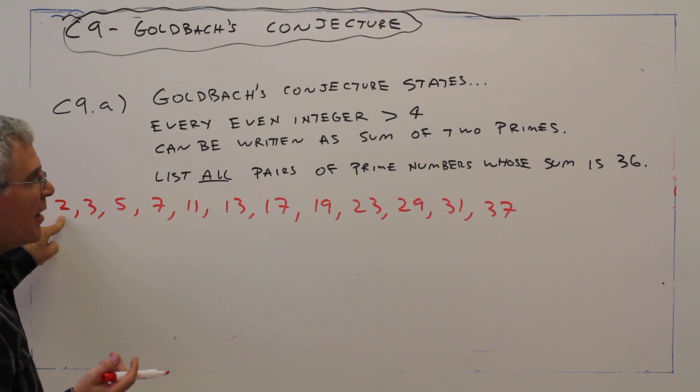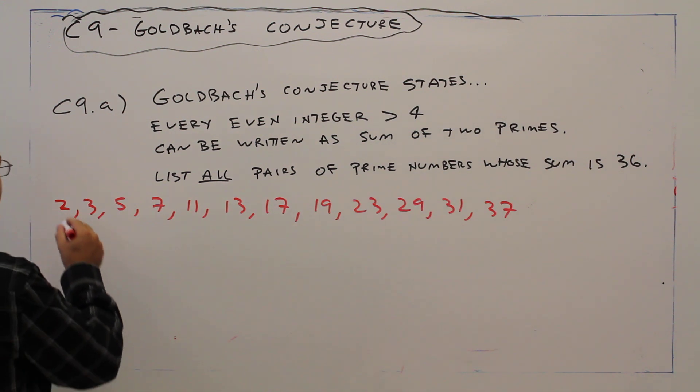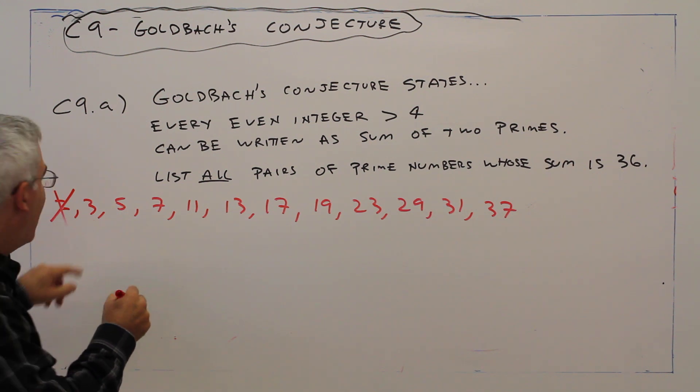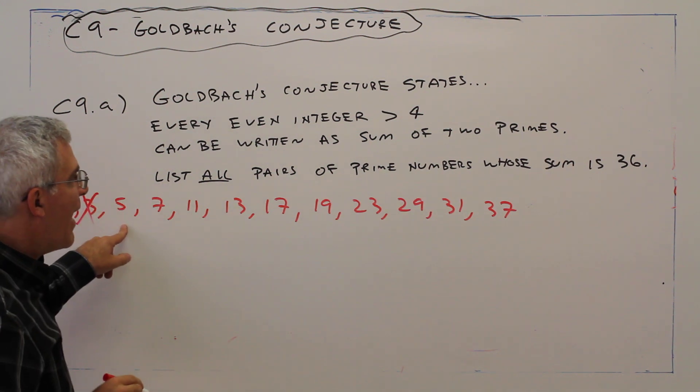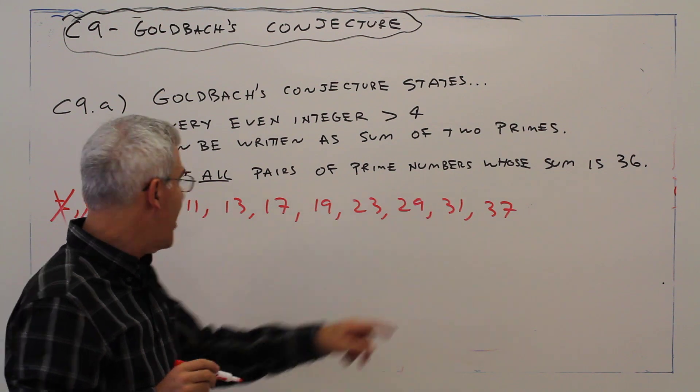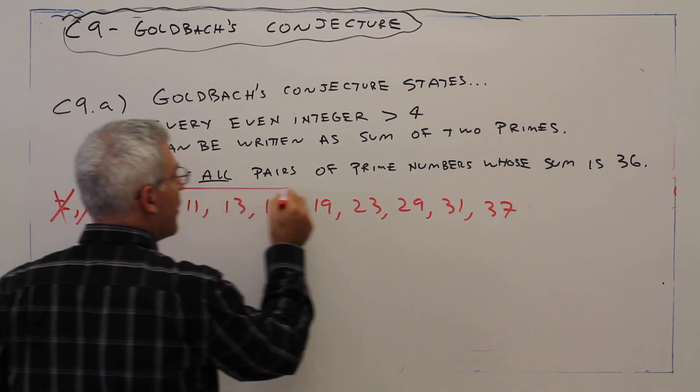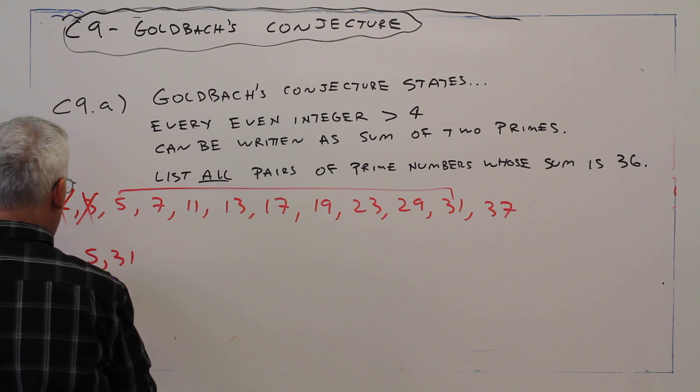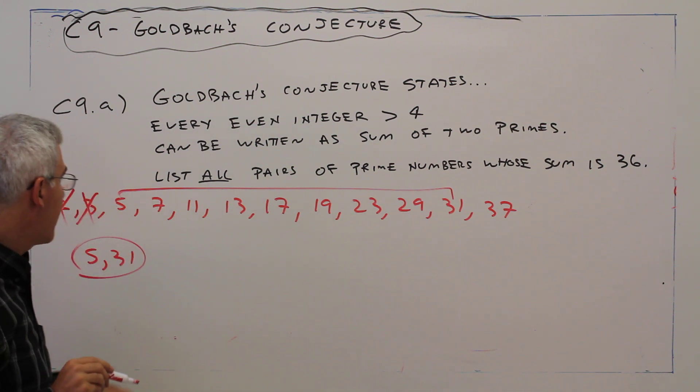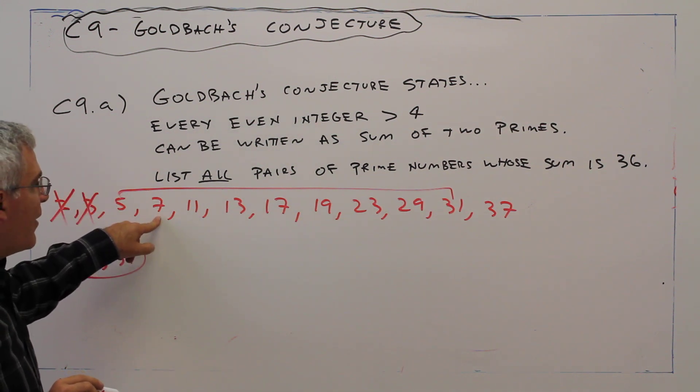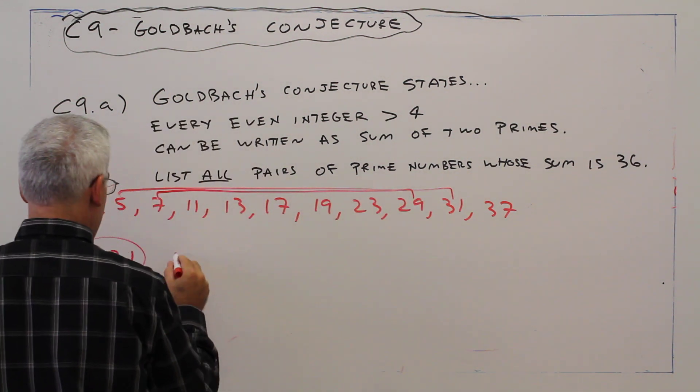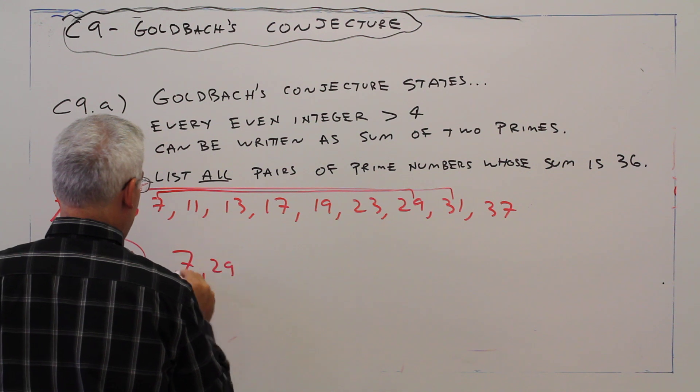Well 2 would be 34. No, that's not going to happen. 3 would be 33. No, 5 with 31. Let's see if I can just do this. That's one pair. That's another pair. 7 with 29. That's another pair.